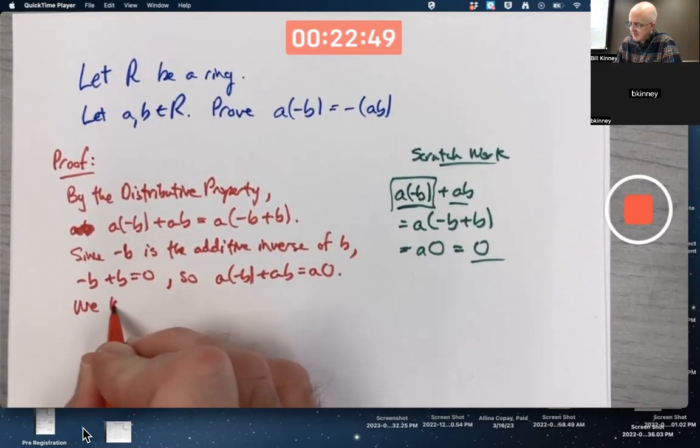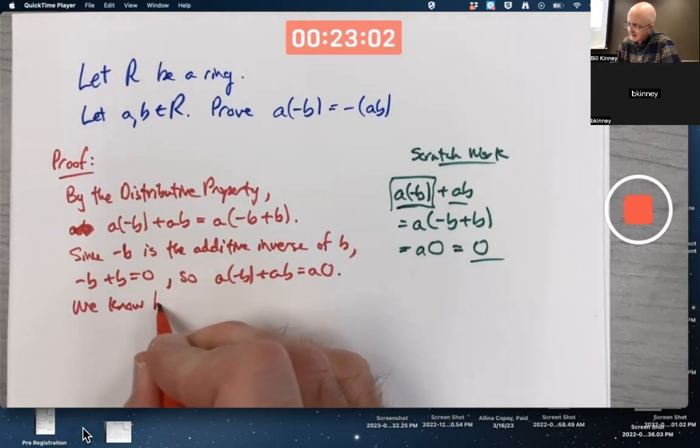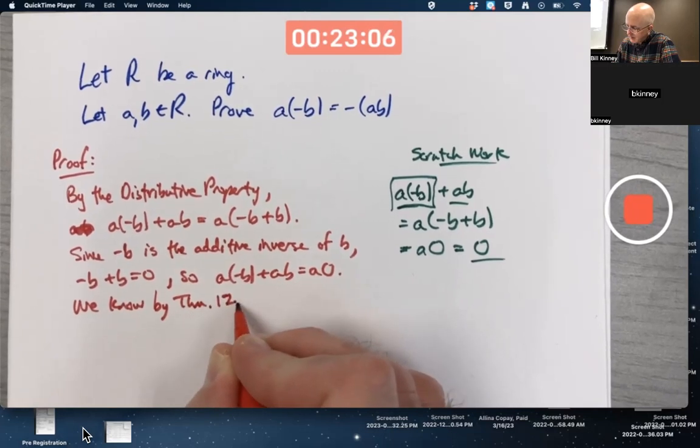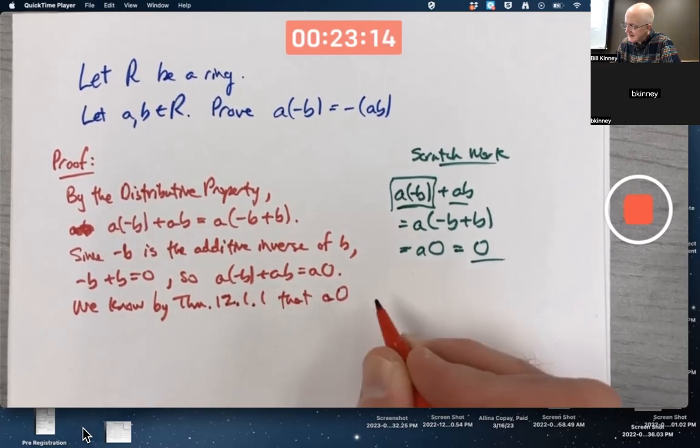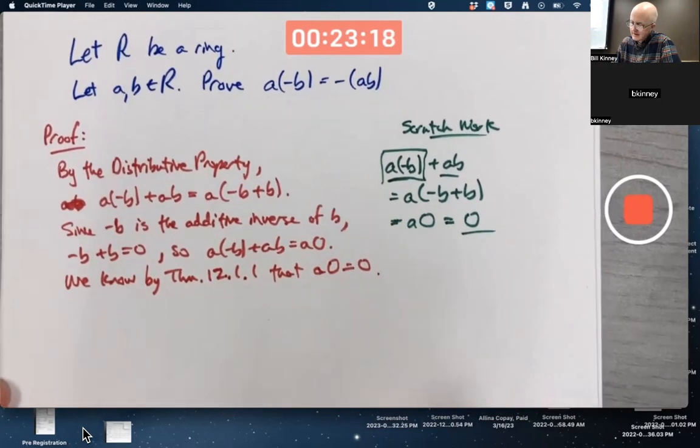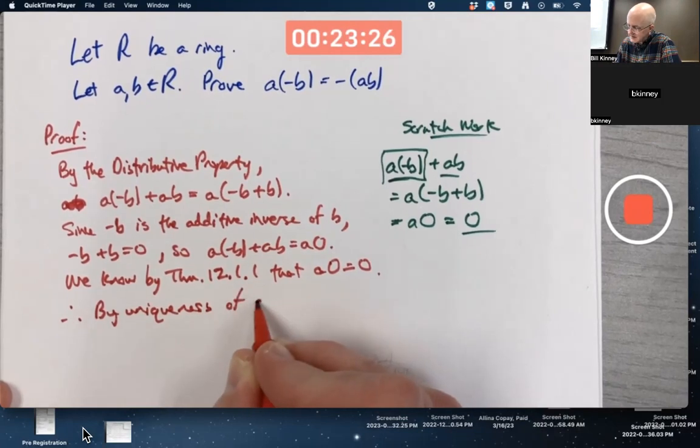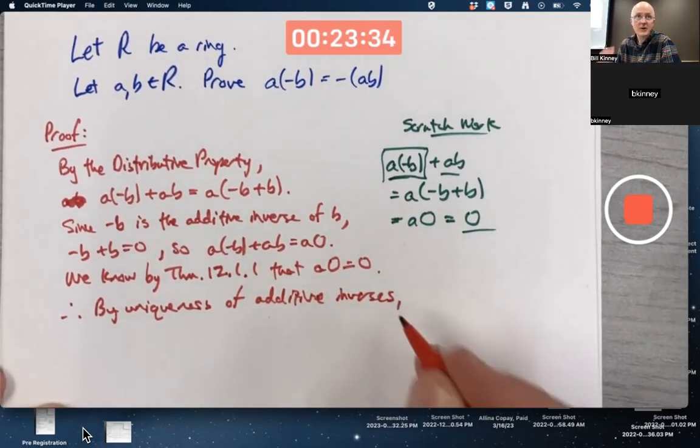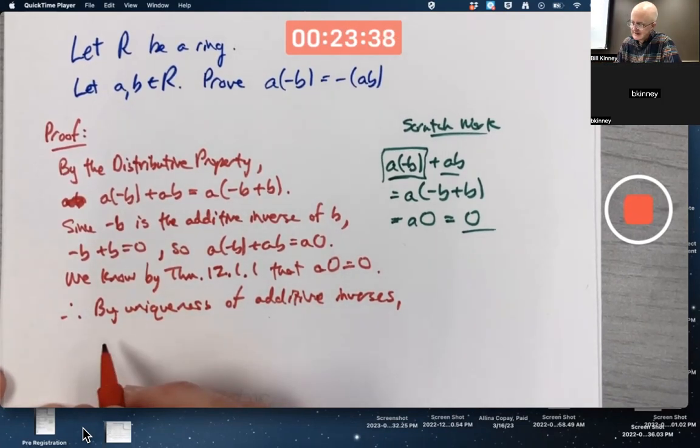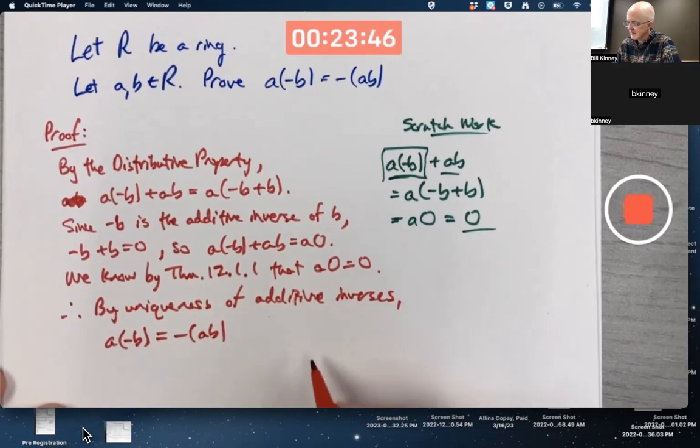We know by a previous property that's been proved, you could quote what theorem it is in the book, I think it's theorem 12.1 part one or something. By theorem 12.1 part one, that A times the additive identity is the additive identity. Therefore, by uniqueness of additive inverses, I'm being maybe a little overkill here, in groups, rings are groups under addition, A times the additive inverse of B must be in fact the additive inverse of AB. We're done. Praise the Lord.